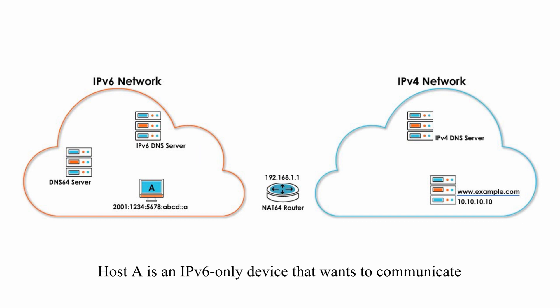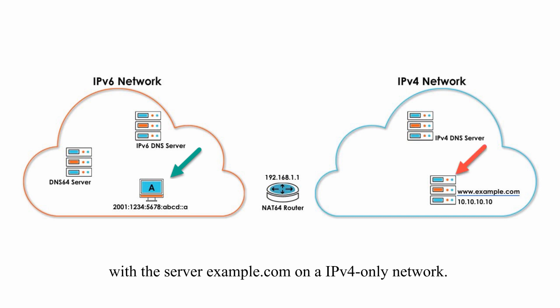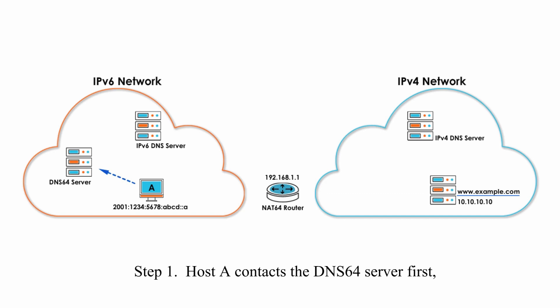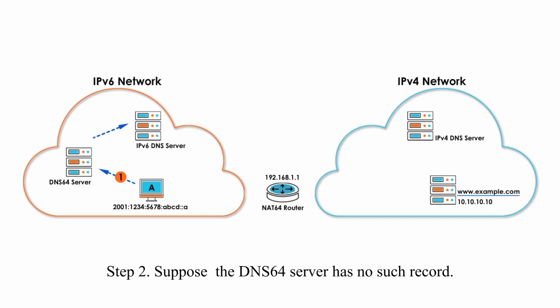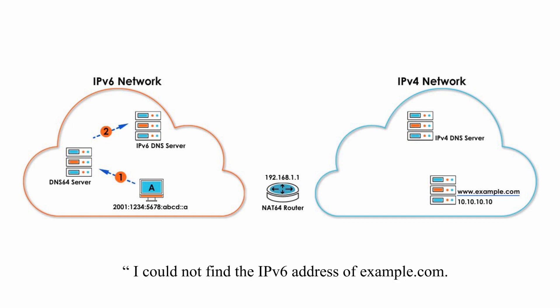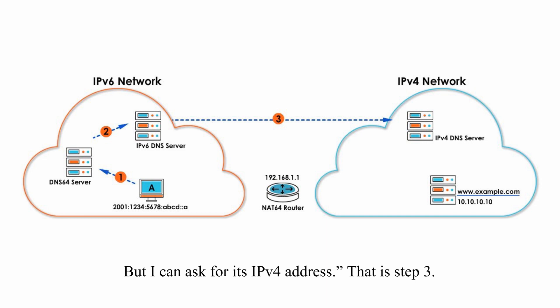Host A is an IPv6-only device that wants to communicate with the server example.com on an IPv4-only network, and this is the most common scenario for the use of NAT64. Step 1: Host A contacts the DNS64 server first, asking for the IPv6 address for the server example.com. Step 2: Suppose the DNS64 server has no such record, then it will ask the IPv6 DNS server. The IPv6 DNS server replies it could not find the IPv6 address of example.com, but it can ask for its IPv4 address.